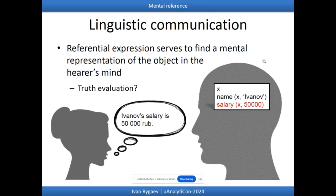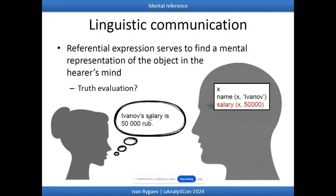The same happens in linguistic communication. When we say that Ivan's salary is five thousand rubles, what we want to do is update the mental representation in the hearer's mind — we want the hearer to find the corresponding representation for Ivanov and update or insert the information that his salary is five thousand rubles. Even a declarative sentence of natural language becomes a kind of instruction, and it cannot be evaluated for truth directly; what we evaluate for truth is the updated representation in the hearer's mind.